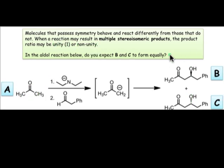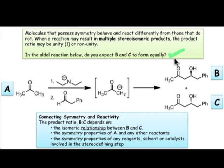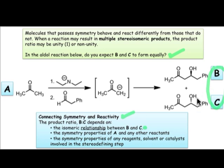To answer the question of whether B and C are going to form in equal amounts, we need to establish a connection between symmetry and reactivity. That connection is going to depend on things like what's the isomeric relationship between the products B and C. In this case, B and C are enantiomers. They'd have equal energy since they're enantiomers, and therefore we might expect that they'd form in equal amounts.